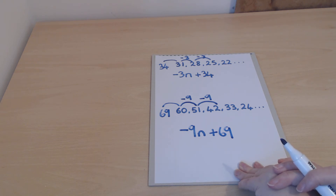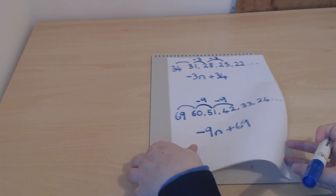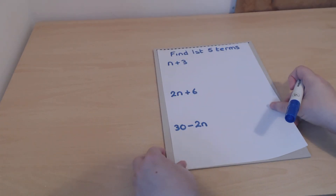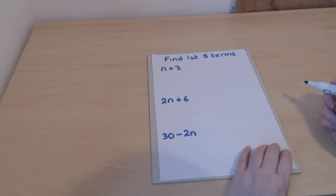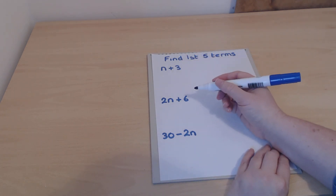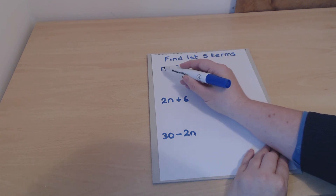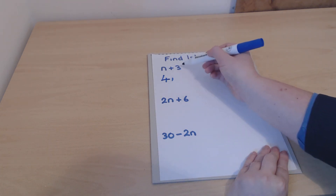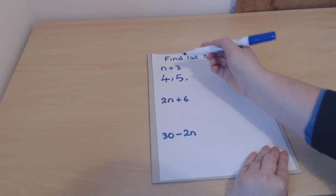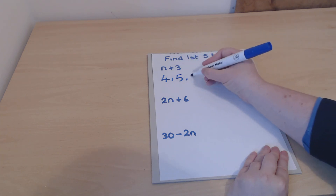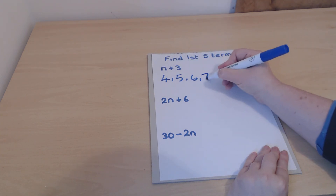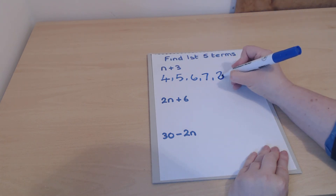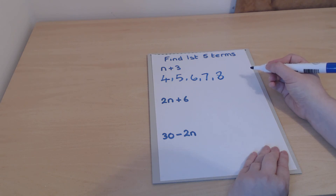That's how we work out what the nth term rule is. Let me recap how we can use the nth term rule to work out the terms. If the rule is n plus 3, the first term is when n is 1: 1 plus 3 gives 4. When n is 2, we get 5. When n is 3, we'll have 6. When n is 4, we'll have 7. When n is 5, we'll have 8. So there are the first five terms of our sequence.